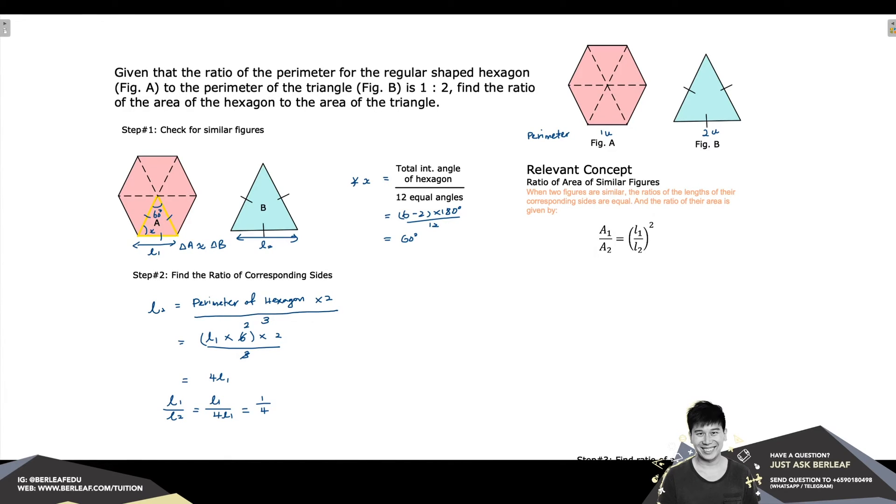And we have come to the last step, which is to find the ratio of the area that we are looking for. And since L₁ over L₂ is equivalent to 1 quarter, we can make use of the formula for the ratio of area of similar figures, where we have area of triangle A over the area of triangle B is equivalent to 1 over 4 power square, giving us 1 over 16. With that, we can also say that area of triangle A is 1 unit and area of triangle B is 16 units.